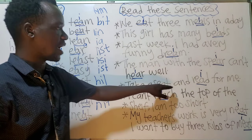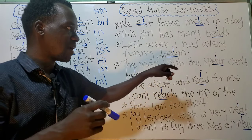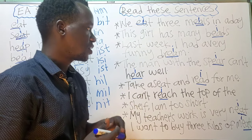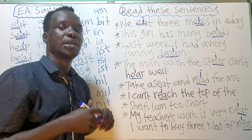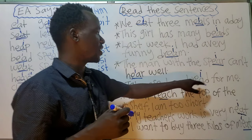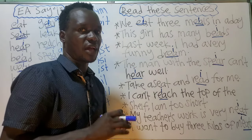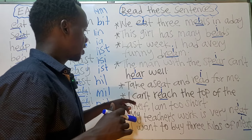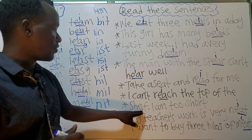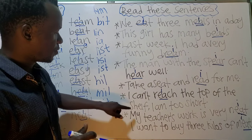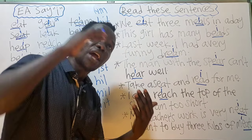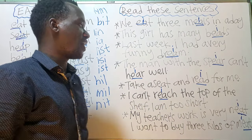And: 'The man with the spear can't hear well.' It means that man who has a spear cannot hear well — he is deaf. Next: 'Take a seat and read for me,' meaning sit down and read for me. And then: 'I can't reach the top of the shelf.'